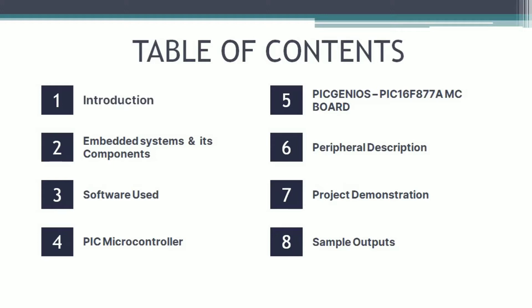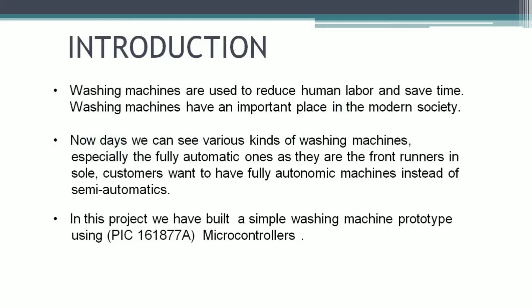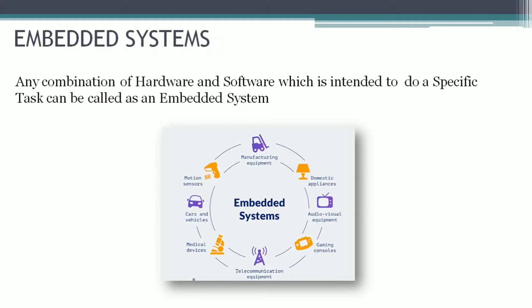Moving on, we will see the peripheral description of that board and finally the project demonstration and sample outputs. In the introduction: washing machines are used to reduce human labor and save time, and they have an important place in modern society. Nowadays we can see various kinds of washing machines, especially fully automatic ones, as customers want fully automatic machines instead of semi-automatics. In this project we are building a prototype for a simple washing machine using a PIC microcontroller.